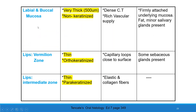Oral epithelium covering labial and buccal mucosa is very thick and non-keratinized and firmly attached to the underlying mucosa; fat and minor salivary glands are present. The oral epithelium of the lips at the vermilion border is thin and orthokeratinized, with sebaceous glands present in the submucosa. The intermediate zone of the lip is thin and parakeratinized, with elastic and collagen fibers in the connective tissue.